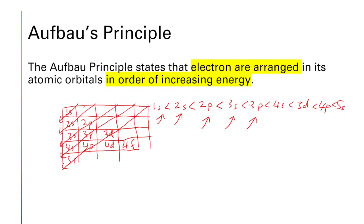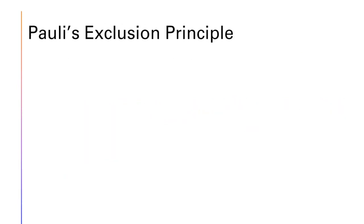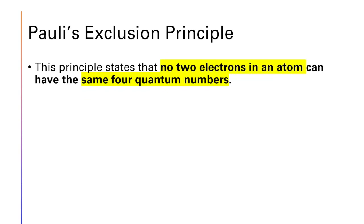That is the Aufbau principle, but you cannot use Aufbau alone — you need all three rules. The next rule is the Pauli exclusion principle, which states that no two electrons in an atom can have the same four quantum numbers.